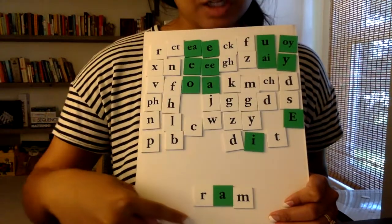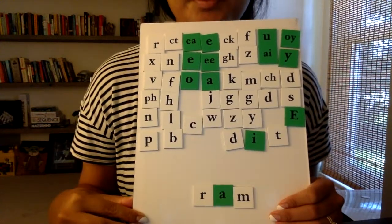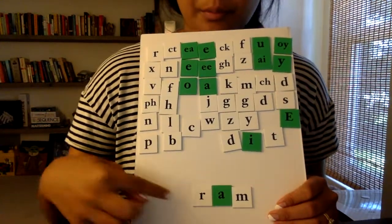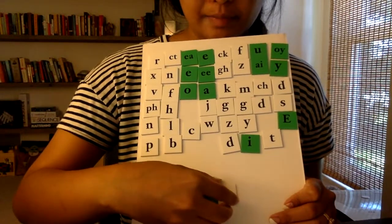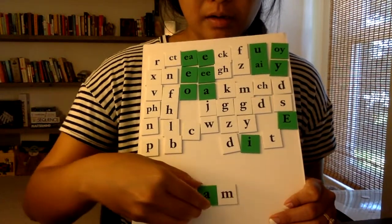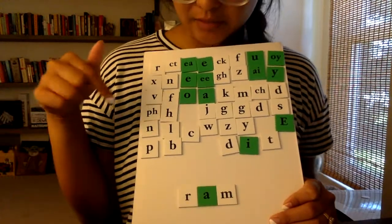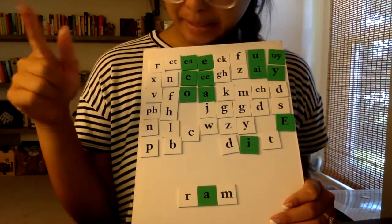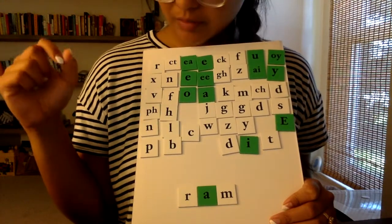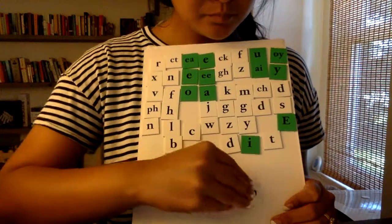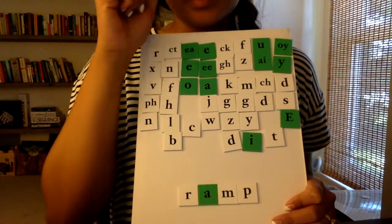Now let's change ram to 'ramp'. I'm keeping all this part the same, but I hear another sound at the end — ram, then P. So I need to find the letter that says P, which is right over here. Ramp.